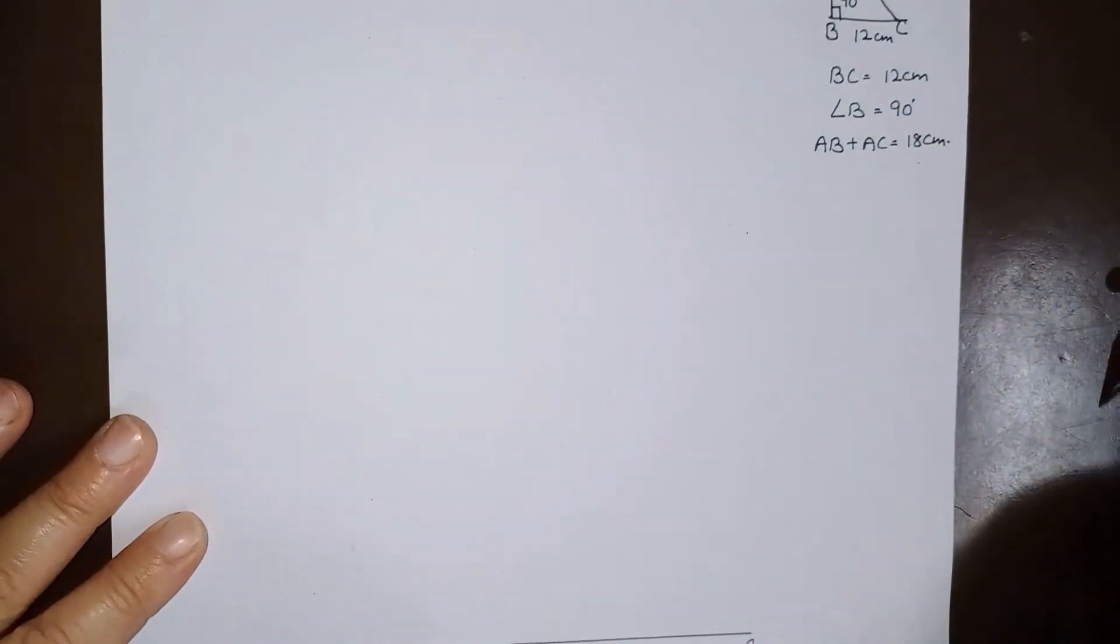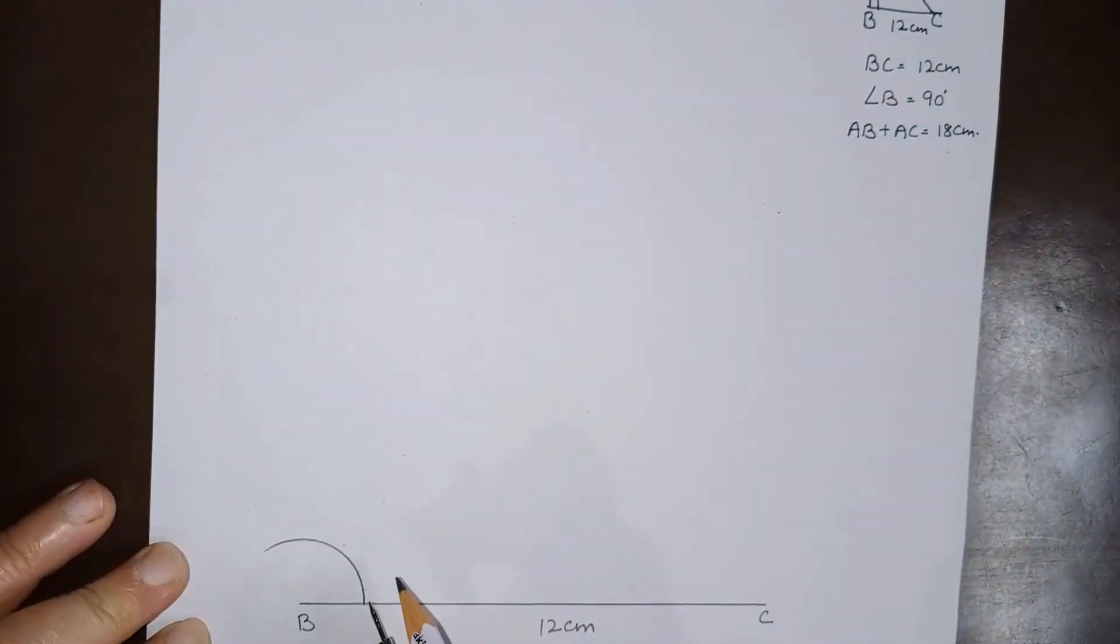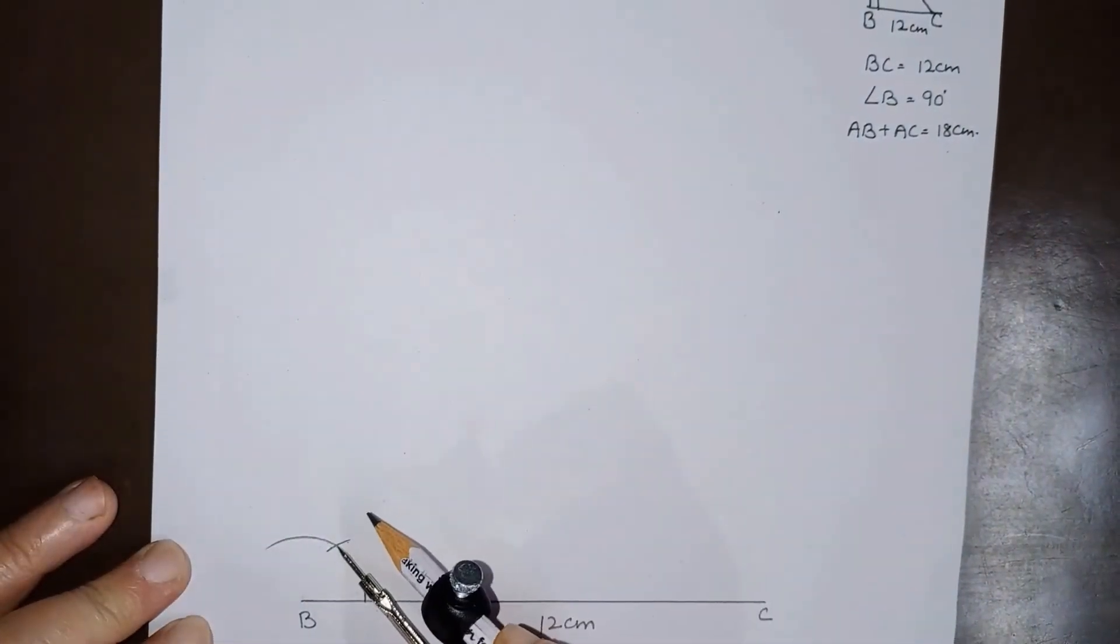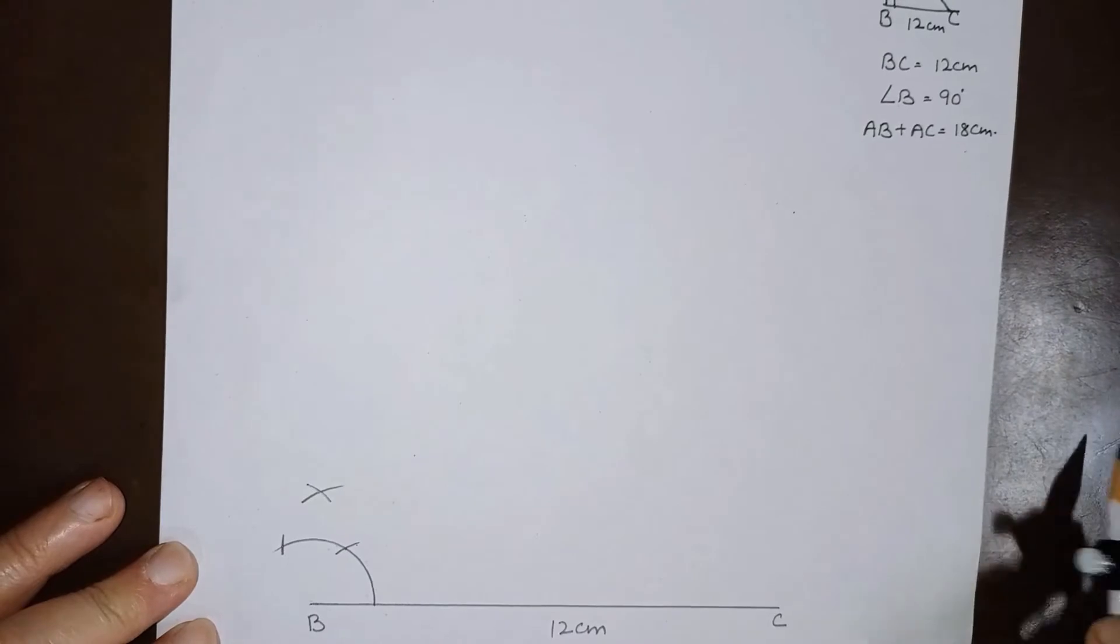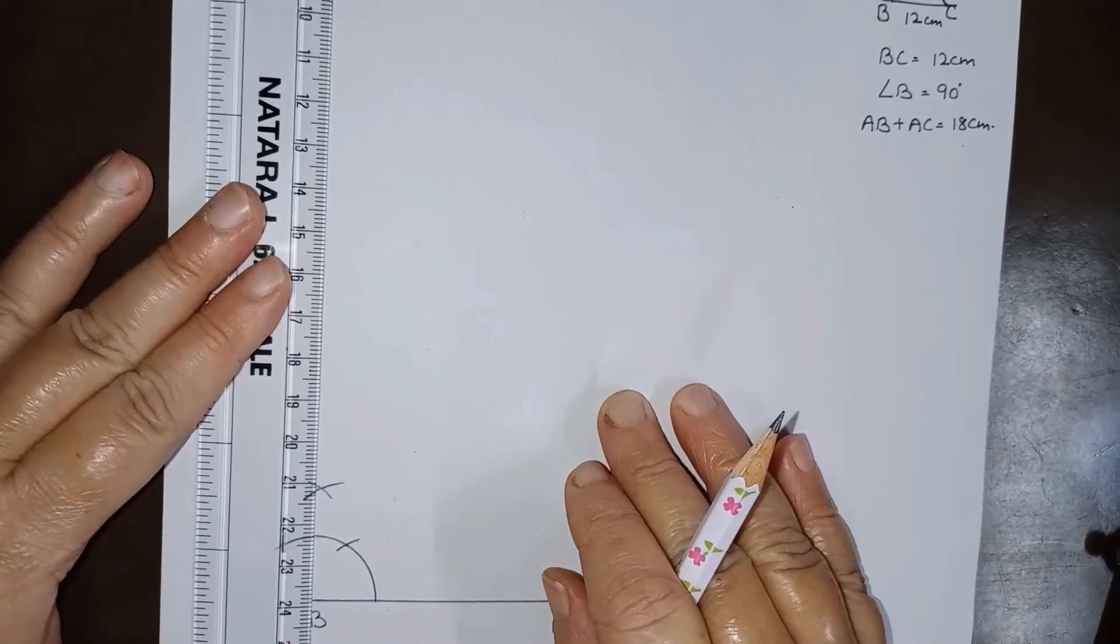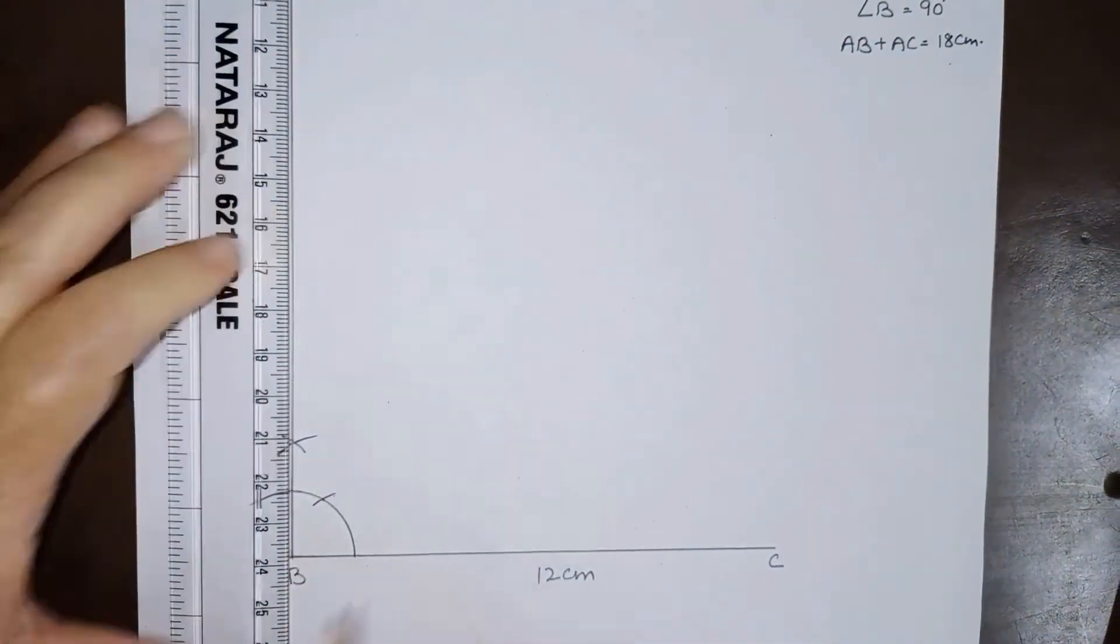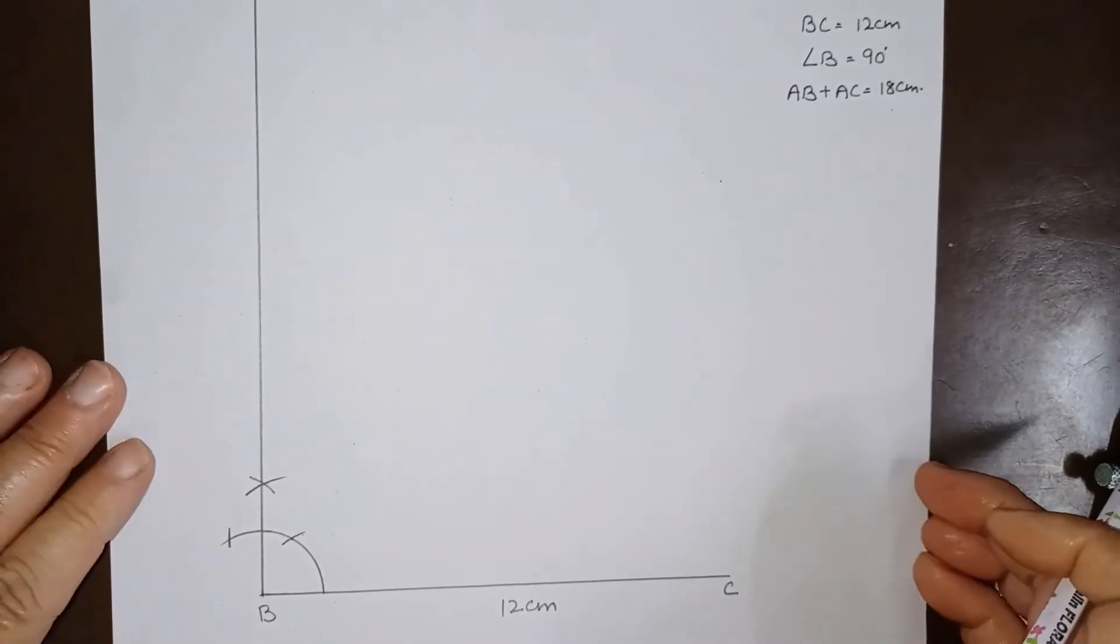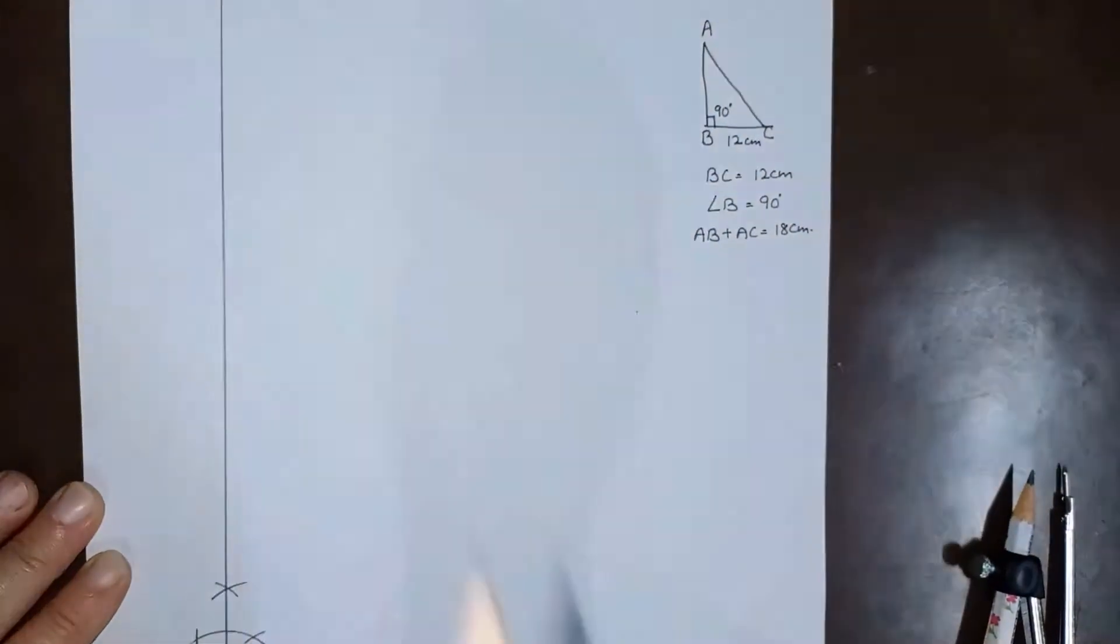At B we have to make angle of 90 degrees. We will make angle of 90 degrees here at B. At point B we will construct angle of 90 degrees. This is second arc, this will be third arc, and between these two arcs we have an angle of 90 degrees. We will join this with B and this will be angle of 90 degrees at B. We can write this as X, so this is ray BX.